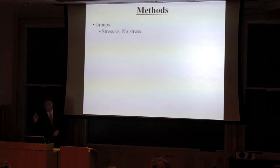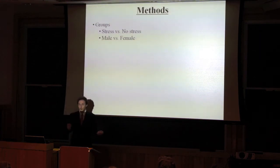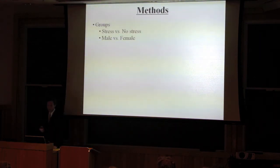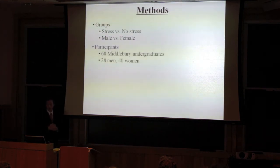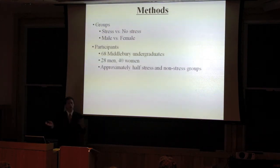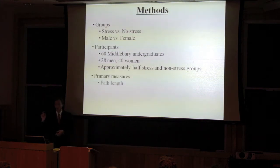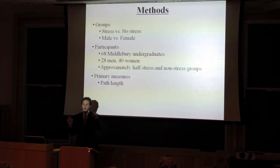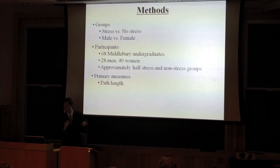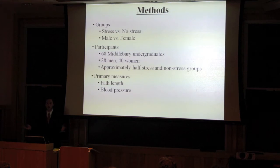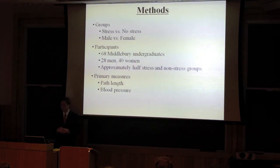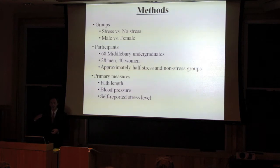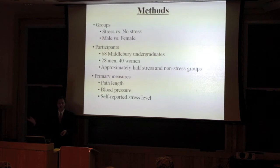Methods. There were four groups. We had a stress group and a non-stress control group. We also considered male versus female. Participants were 68 Middlebury undergrads, that's 28 men, 40 women, approximately split half and half into the stress and non-stress groups. My primary measures were path length, tracking how long the path was that they were taking, so a shorter path would mean better performance. We also monitored blood pressure to monitor physiological arousal. And finally, we asked them to rate how stressed they felt, both when they first started the task and then after they completed the navigation task.